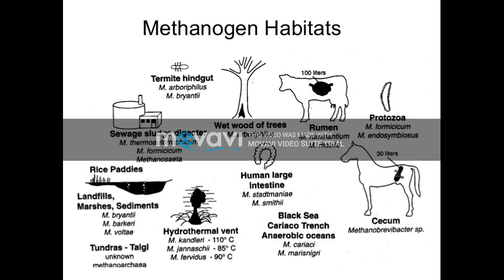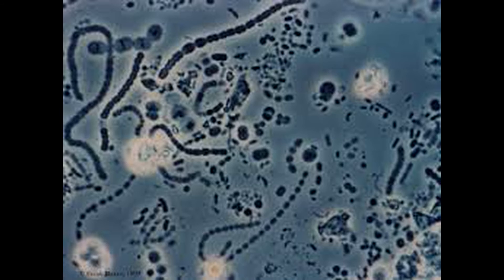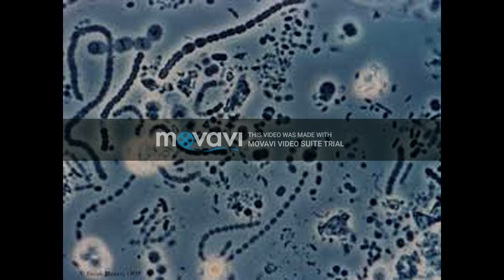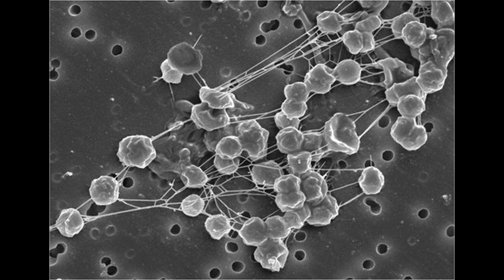Methanogens are able to reduce carbon dioxide into methane. They are obligately anaerobic and can die if exposed to oxygen. They produce marsh gas that can be observed as bubbles in stagnant water, and are also present in the gut of cattle and termites since there is no oxygen there. Methanogens use carbon dioxide as an electron acceptor to oxidize hydrogen using unique coenzymes like Coenzyme M and Methanopterin, which are very unique to archaebacteria. These bacteria are not rod-shaped or spherical and can be gram-positive as well as gram-negative.